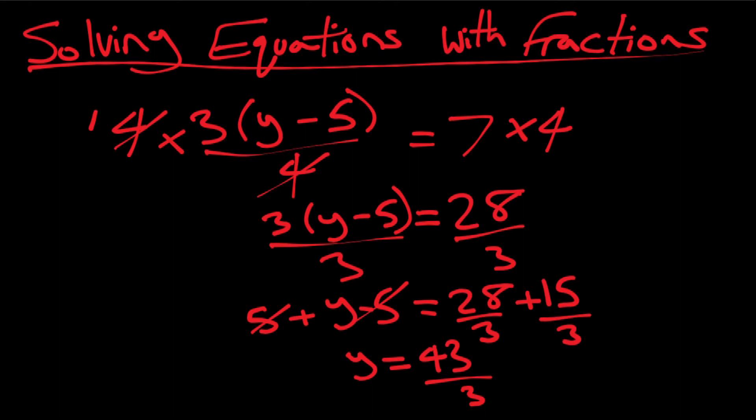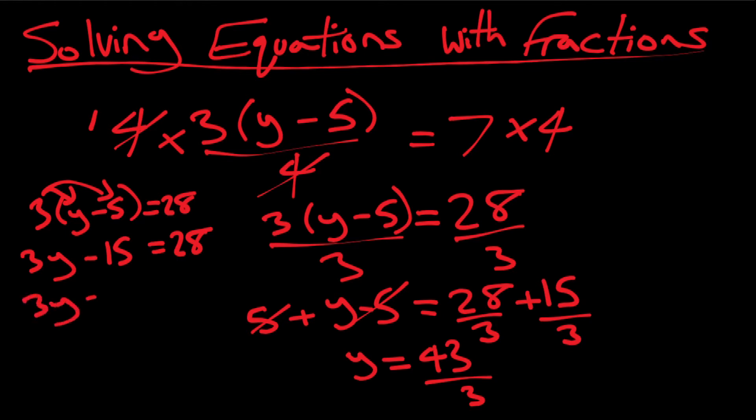That's one way to fix that part. Another way would be to use the distributive property. So I could just open up these brackets here using the distributive property, giving me three times y, three y, and then three times negative five, that's minus 15, equals 28. So if I want to isolate for y, I just add 15 to both sides, getting rid of that negative 15.